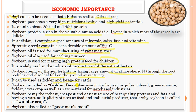Soybean is called a golden bean because it can be used as a pulse, oilseed, green manure, fodder, cover crop, and raw material for agro-based industries. Being the richest, cheapest, and easiest source of best quality protein and fat, with vast multiplicity of uses as food and industrial products, soybean is called the wonder crop and also the poor man's meat.